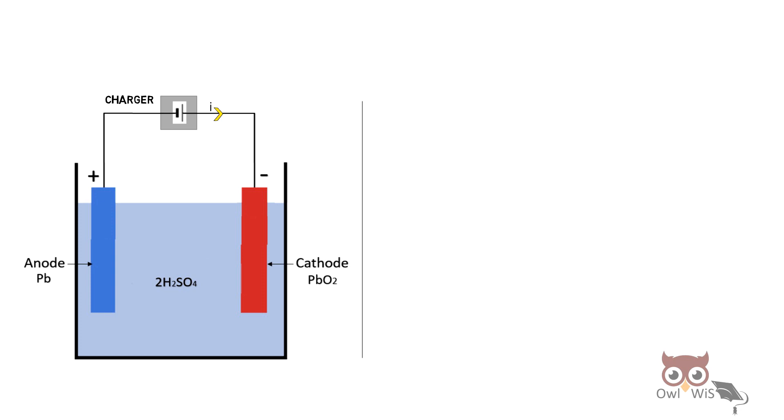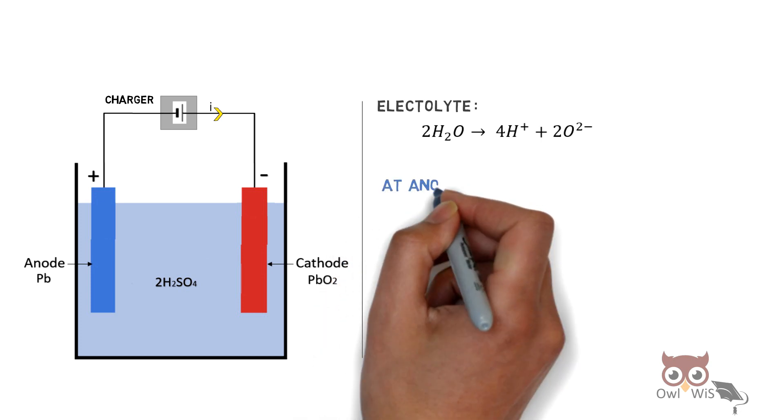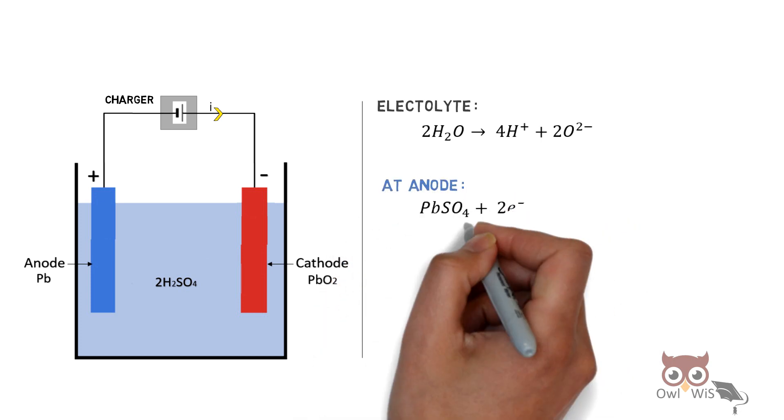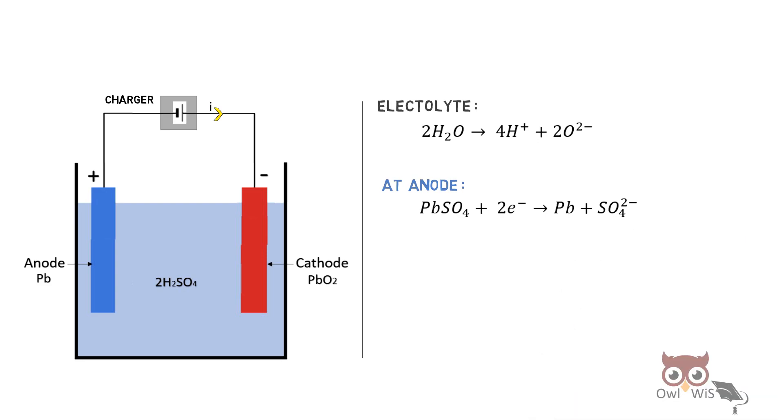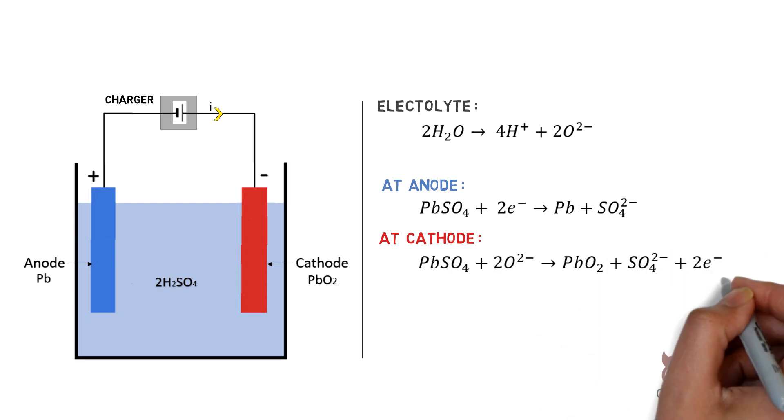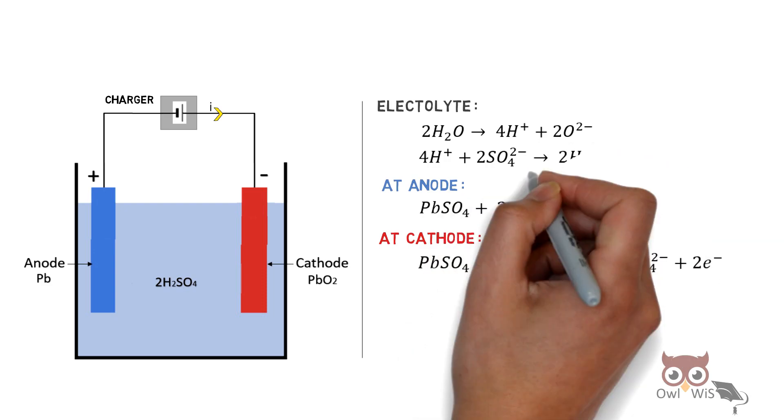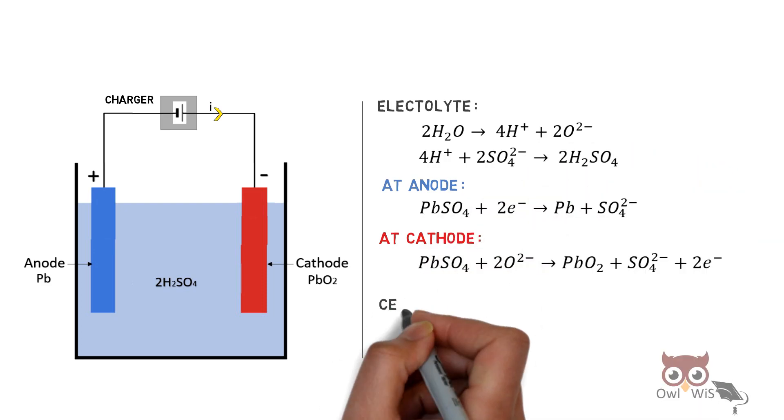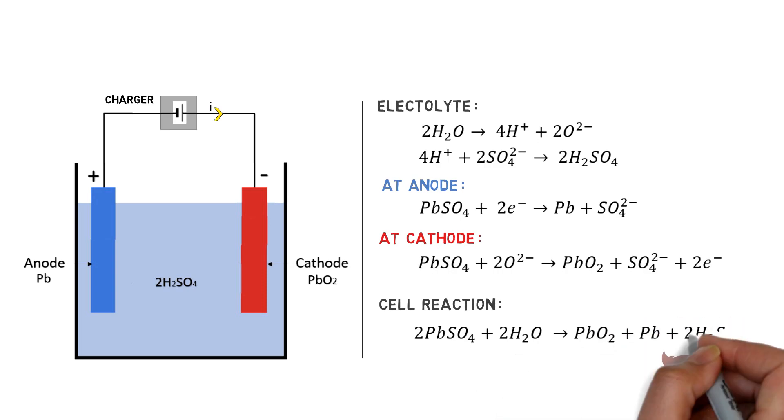Let us understand the reactions. In the electrolyte, water breaks into hydrogen ions and oxide. At the anode, lead sulfate in the presence of electrons forms lead and sulfate. At the cathode, lead sulfate combines with oxide ions to form lead peroxide and sulfate. The byproducts combine to form sulfuric acid. This is the total cell reaction.